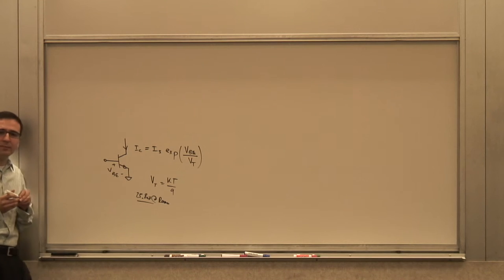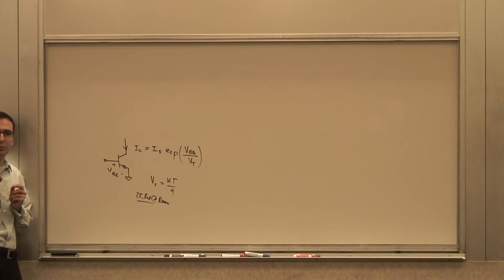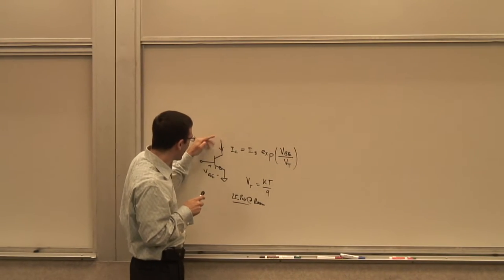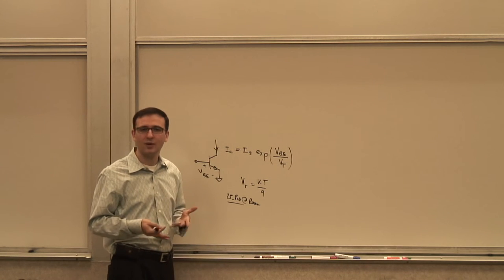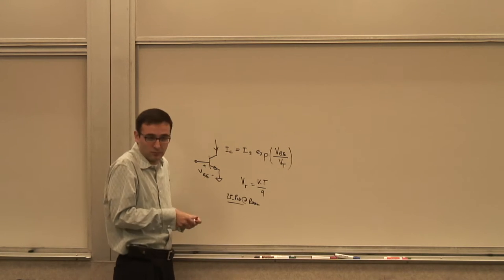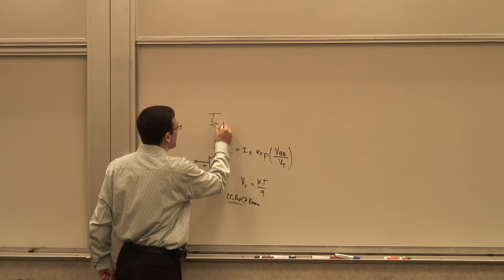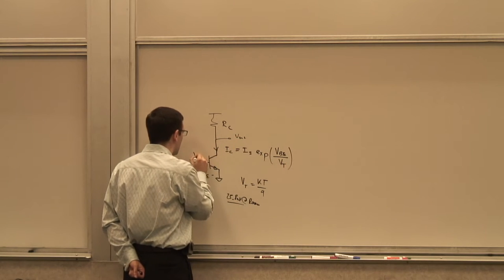If I want to make a voltage amplifier — whose input and output are both voltages — the output of this transistor in the forward-active region is a current. So I need to convert that current into a voltage. The simplest way to convert current to voltage is with a resistor using Ohm's law. If I put it through a resistor RC, I can convert it back to a voltage: Vout is taken here, Vin is applied here.